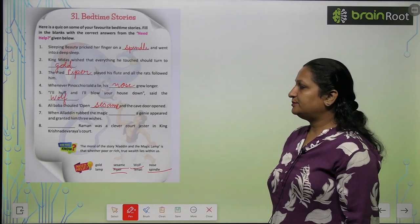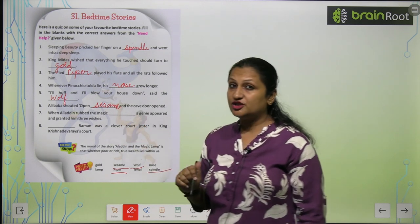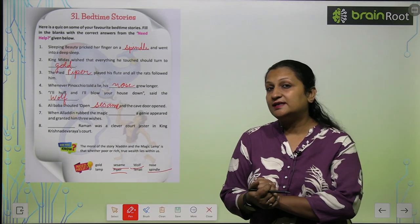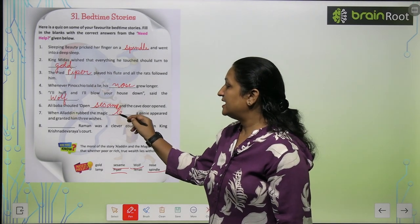When Aladdin rubbed the magic dash, a genie appeared and granted him three wishes. Toh Aladdin ne kis ko rub diya tha? Aladdin ne rub diya tha magic lamp ko.